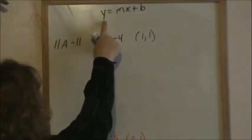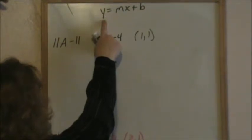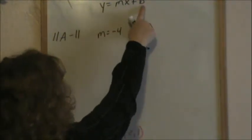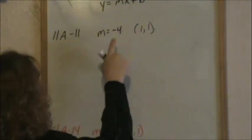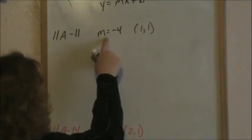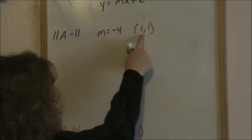So here we are. Remember the general equation of a line is y equals mx plus b. Today we're going to calculate b, which is the y-intercept, when we are given the slope and a point.